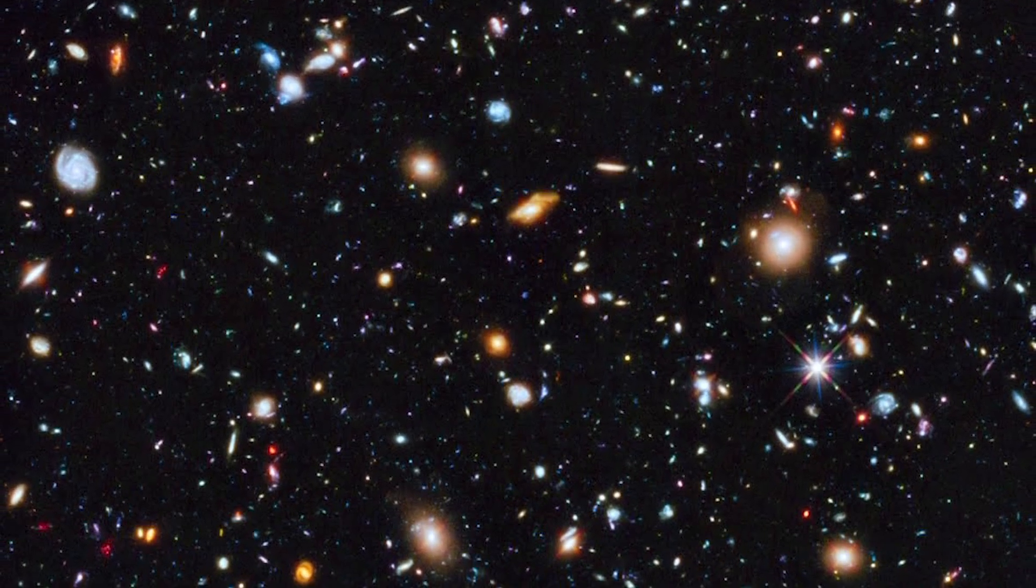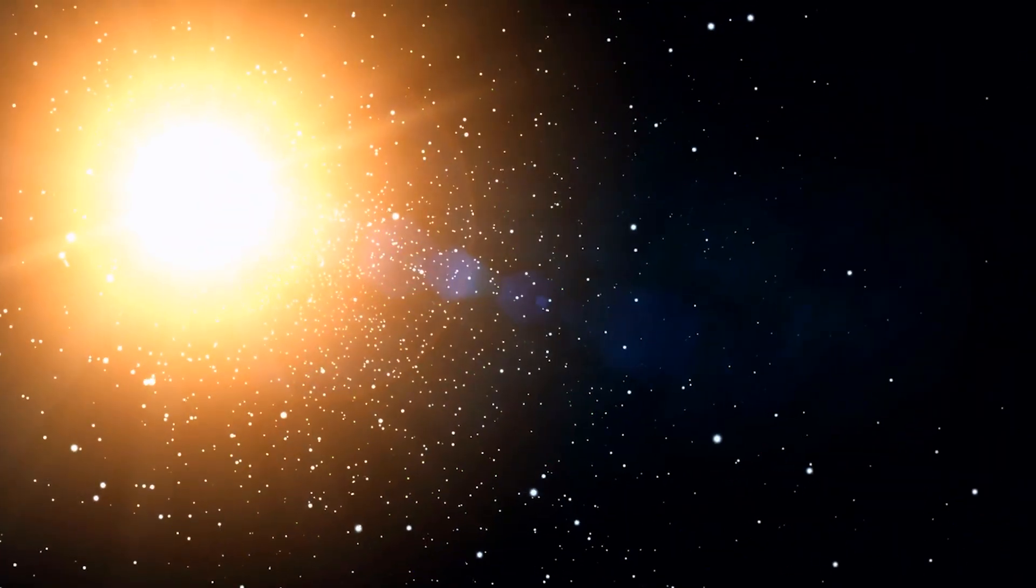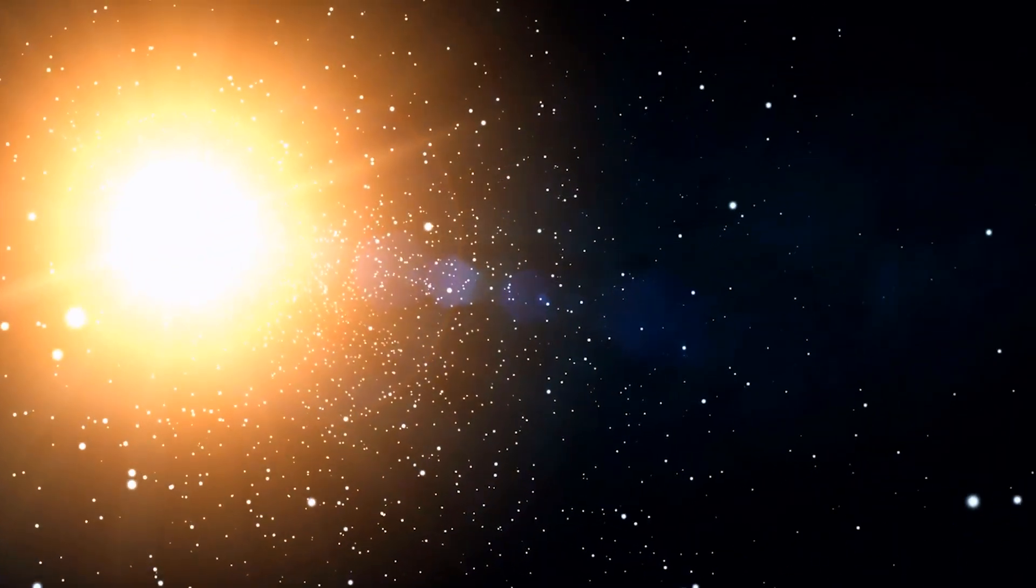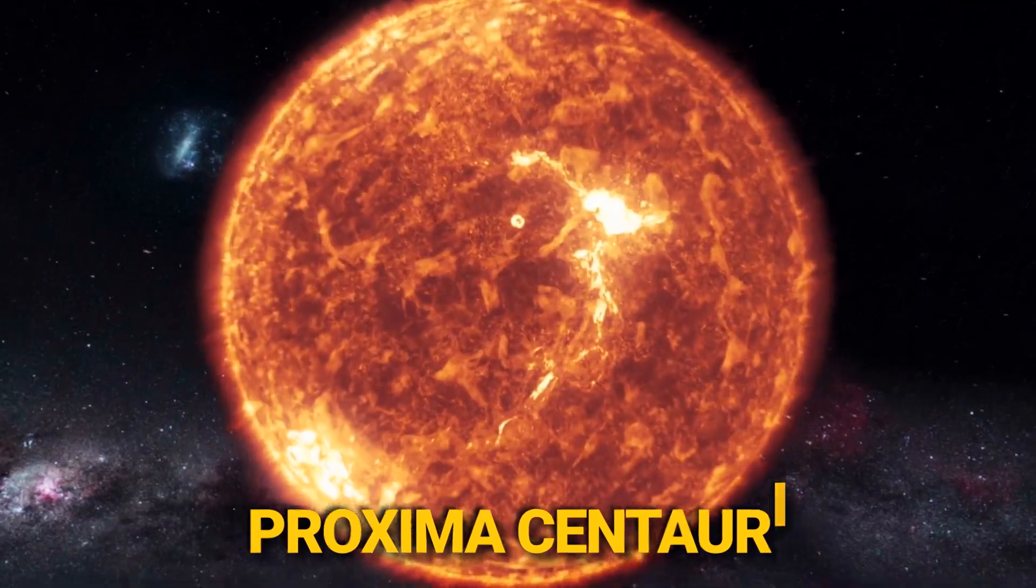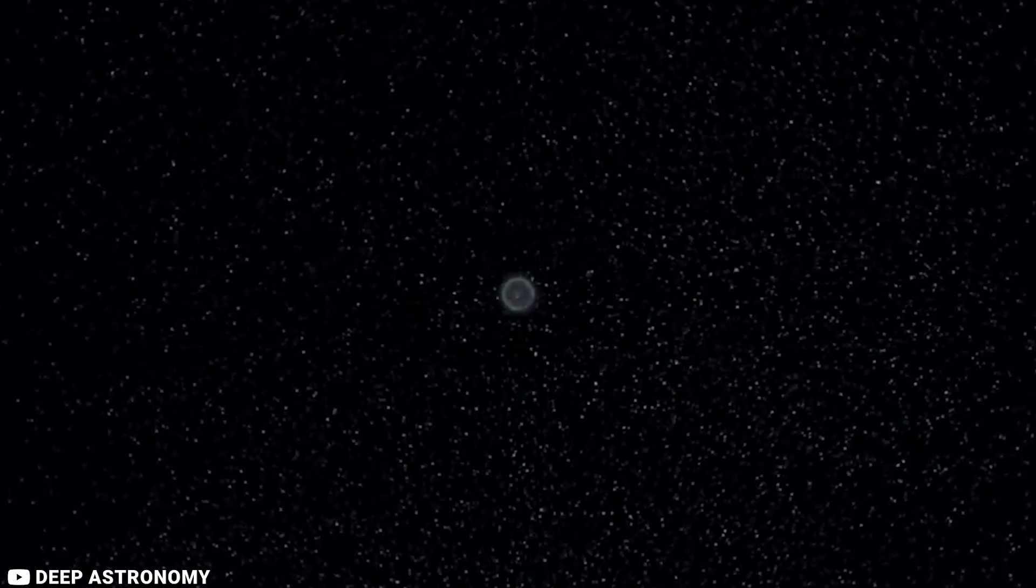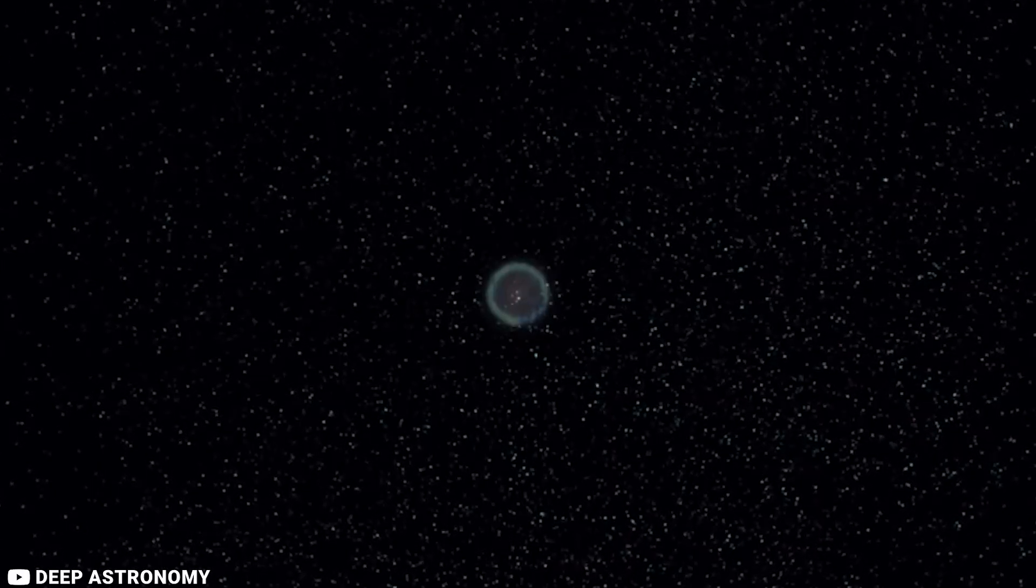Even the space between stars is mostly empty. For example, the distance between the sun and the nearest star, Proxima Centauri, is about 4 light years. That means that there is a lot of empty space between the two stars.